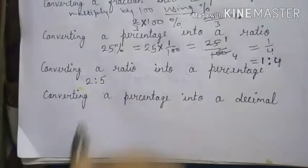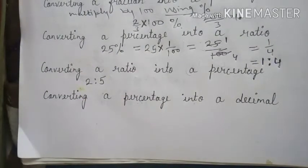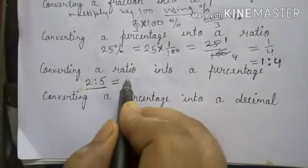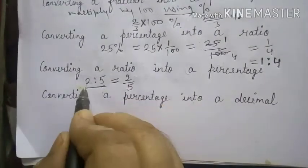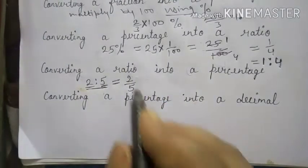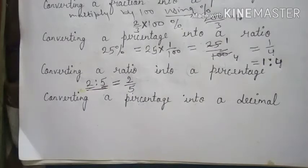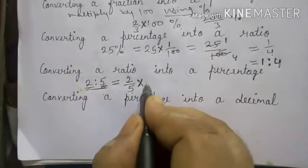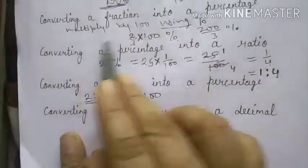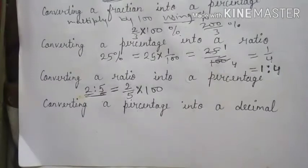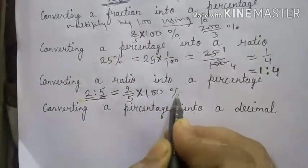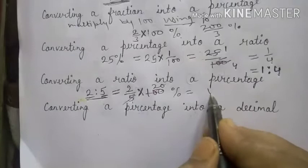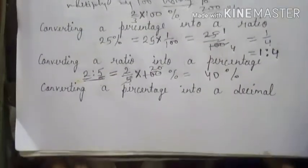Now, converting a ratio into a percentage. If there is 2 is to 5 and we have to convert it into percentage, first write the ratio as a fraction: 2 upon 5. Then multiply by 100 to convert to percentage — as I told you earlier, multiply the fraction by 100 and use the percent sign. Dividing 100 by 5 gives 20, so 2 × 20 = 40%. The answer is 40%.